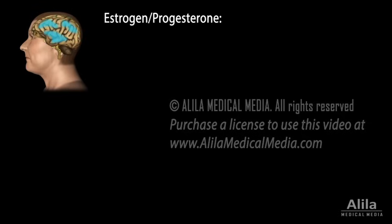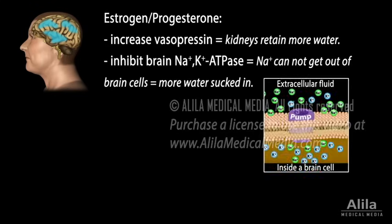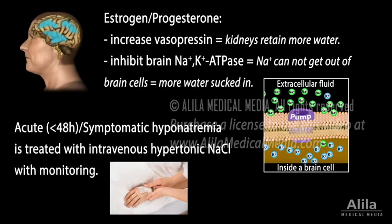Premenopausal women are more susceptible to acute hyponatremia with severe brain edema, perhaps because female hormones increase vasopressin level, and inhibit the brain's sodium-potassium pump, which pumps sodium out of the cell and helps maintain normal brain volume. Acute or symptomatic hyponatremia is an emergency and should be treated with intravenous hypertonic sodium chloride, but sodium levels must be closely monitored to avoid overly rapid correction.